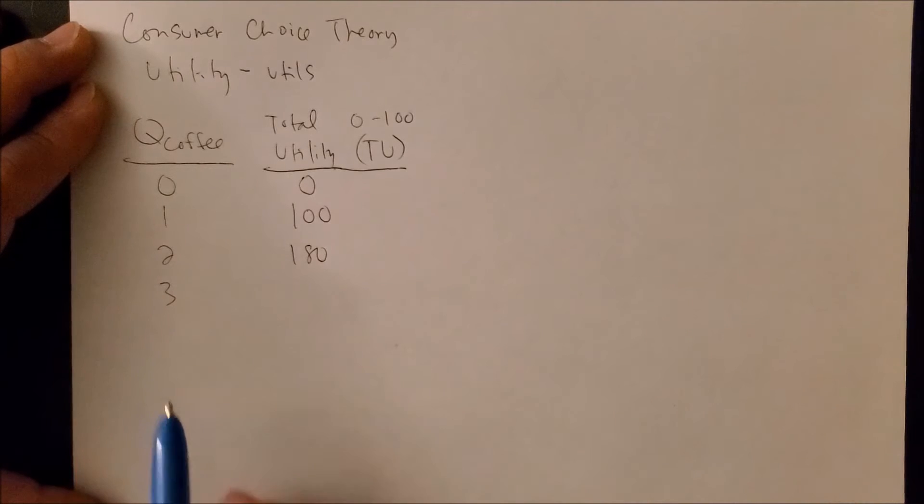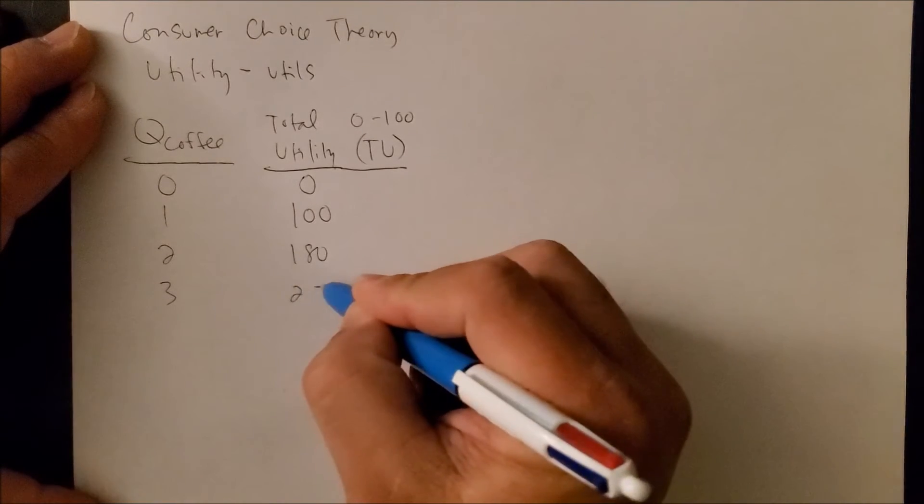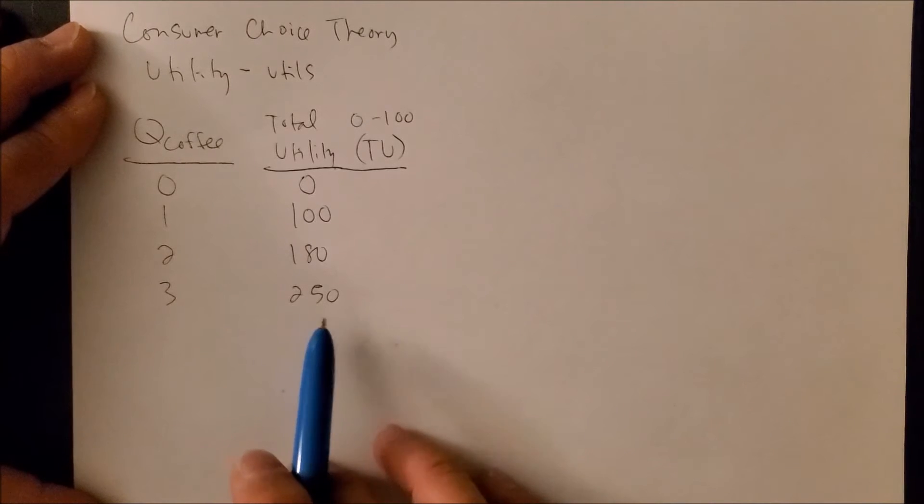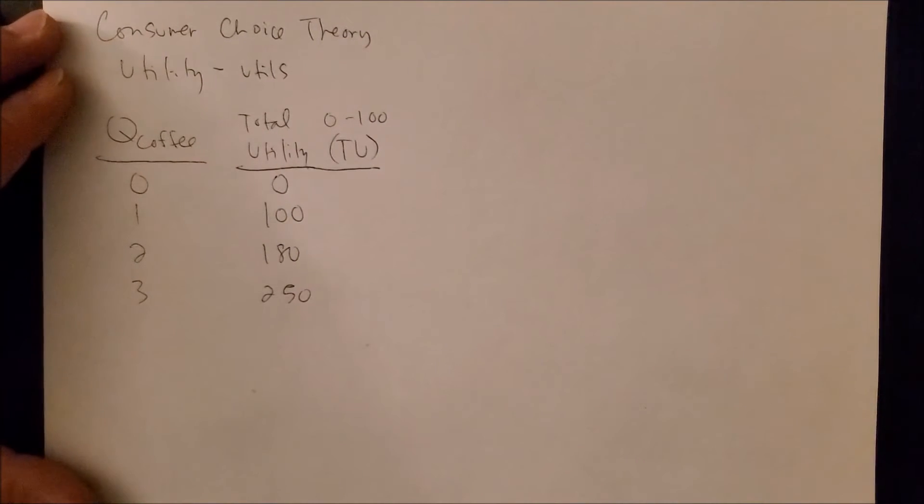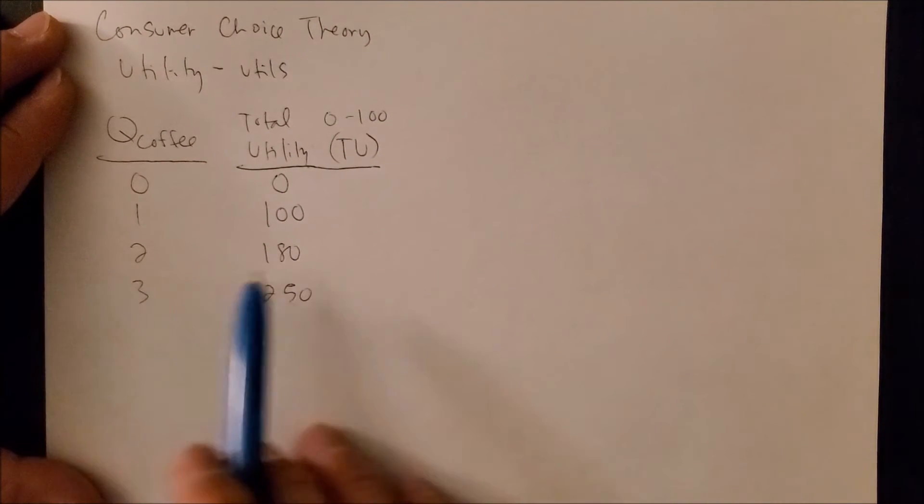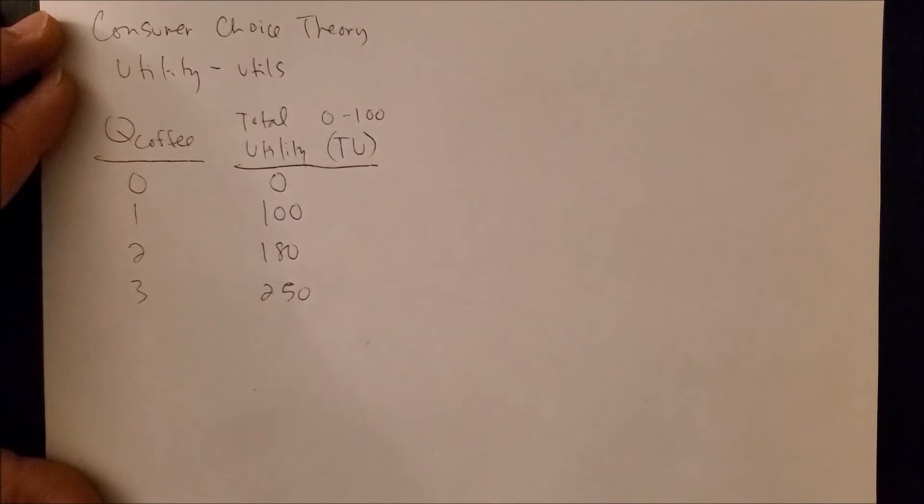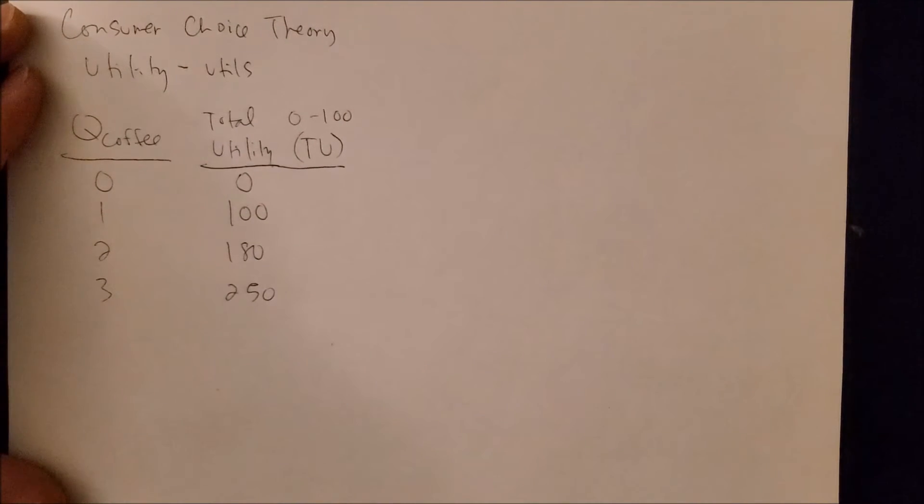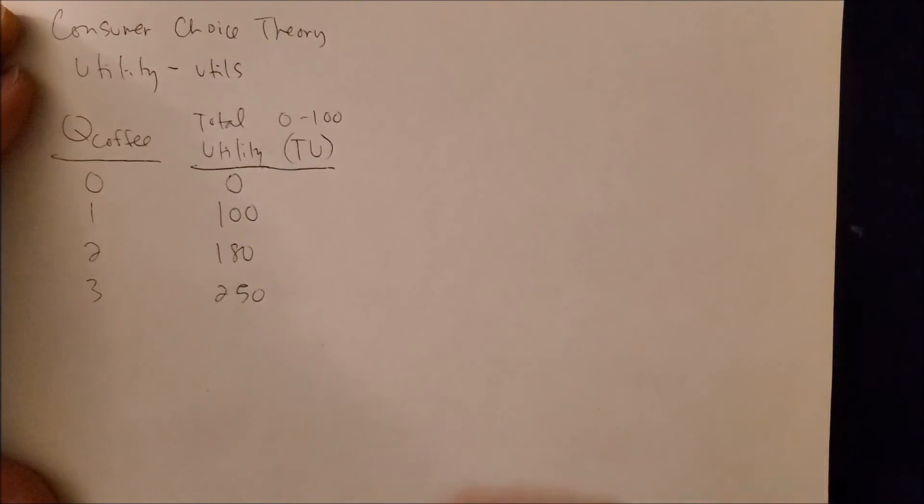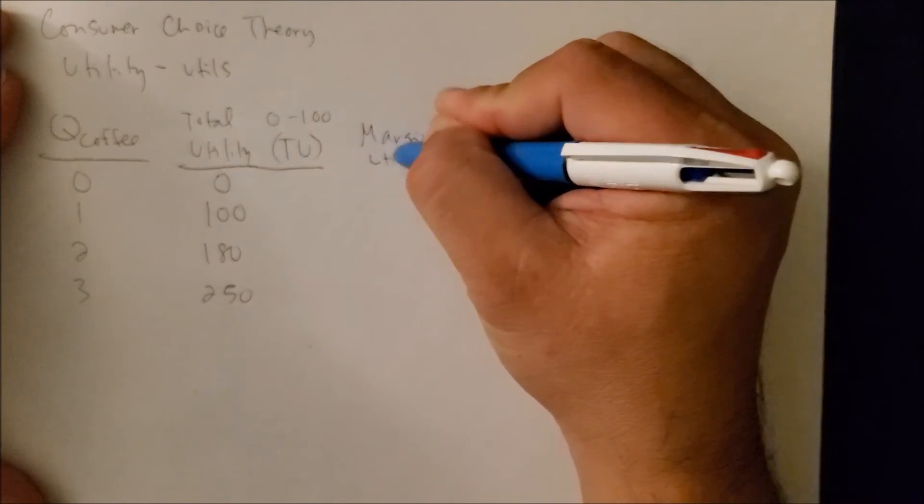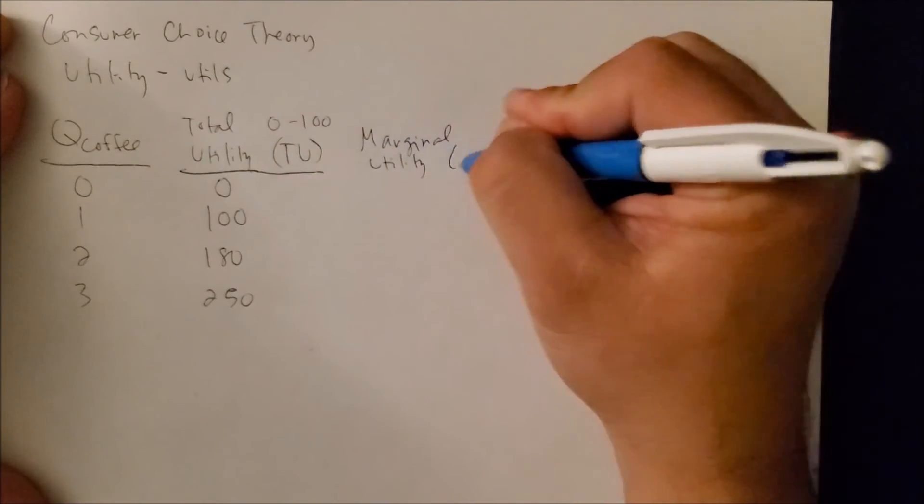And let's say by the end of the day you have your third cup of coffee, but again it does not give you that same spark as it did at 6 a.m. or 7 a.m., and so you have a total of 250 total utilities or 250 utils overall. So now we can see that we have the columns we need in order to find what we call the marginal utility.